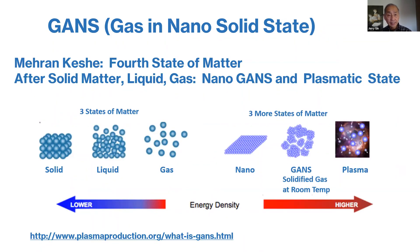GANs is gas in the nano solid state. I'll describe that in greater detail in the next slide so you have a better understanding. It is another state of matter — still matter. You normally know about solids, liquids, and gases. At a higher energy level are nano, GANs, and plasma. I'll talk about that in another slide.